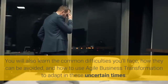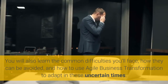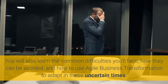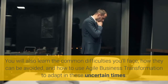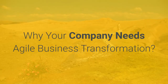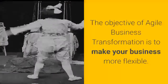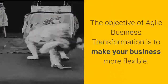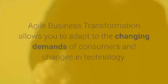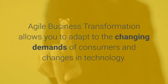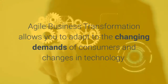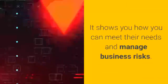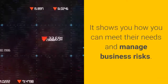You will also learn the common difficulties you'll face, how they can be avoided, and how to use agile business transformation to adapt in these uncertain times. The objective of agile business transformation is to make your business more flexible. It allows you to adapt to the changing demands of consumers and changes in technology, and shows you how you can meet their needs and manage business risks.